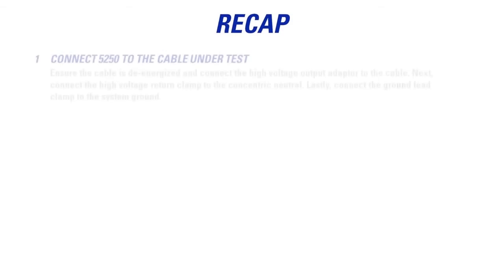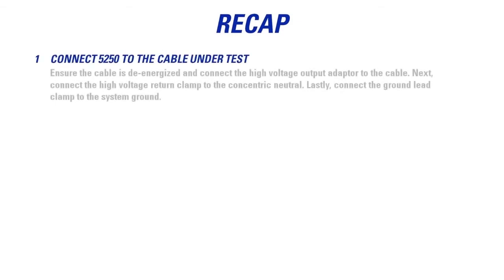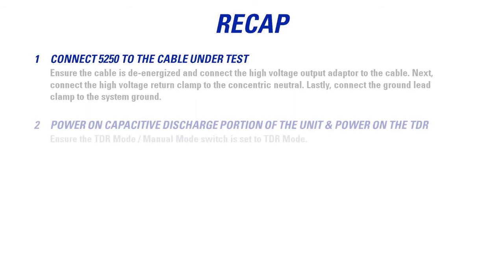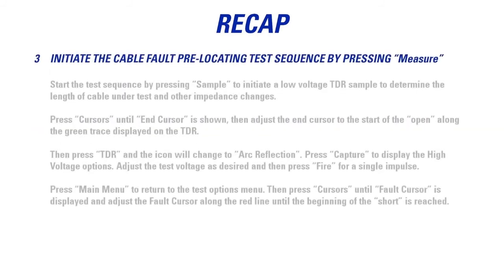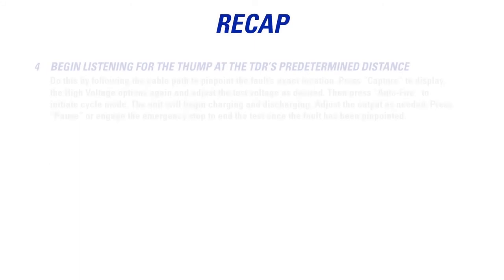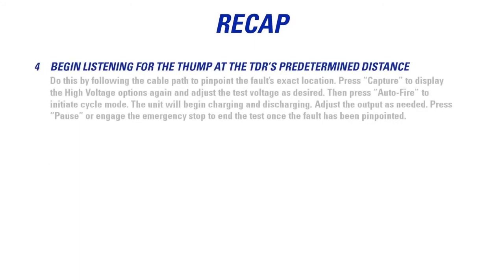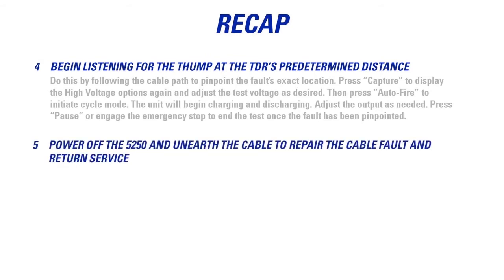To recap, connect the 5250 to the cable under test. Next power on the capacitive discharge portion of the unit and power on the TDR. Initiate the cable fault pre-locating test sequence by pressing measure. Begin listening for the thump at the TDR's predetermined distance. And finally power off the 5250 and unearth the cable to repair the cable.